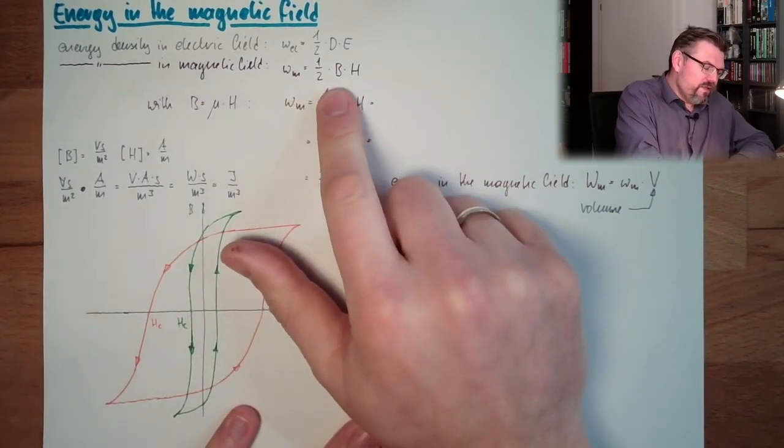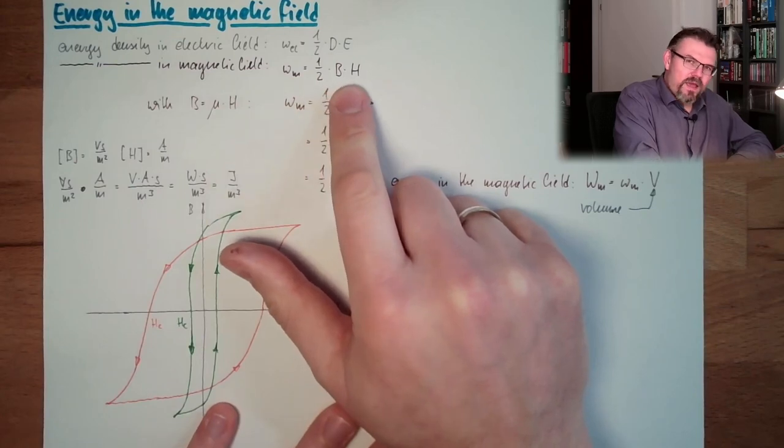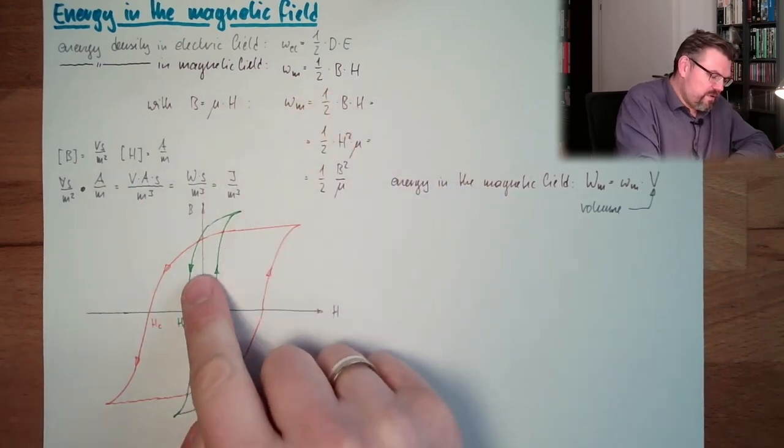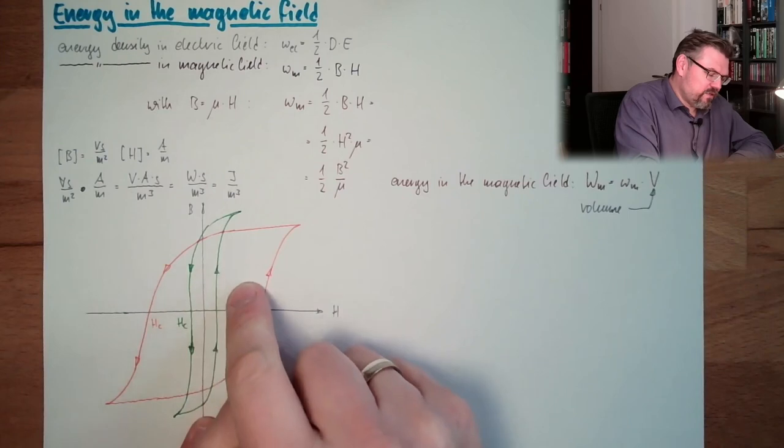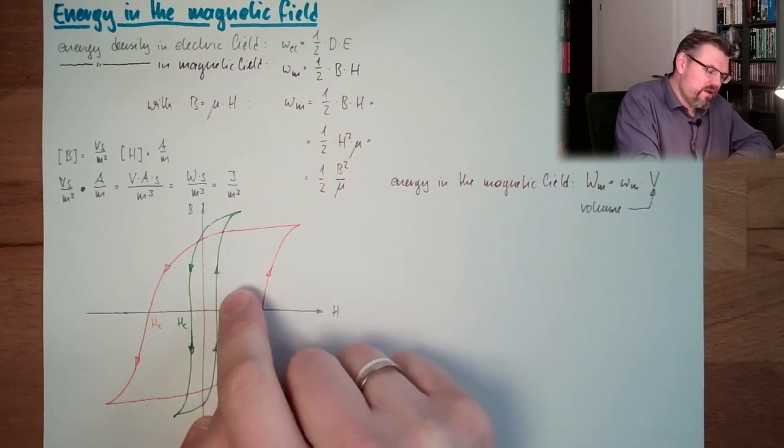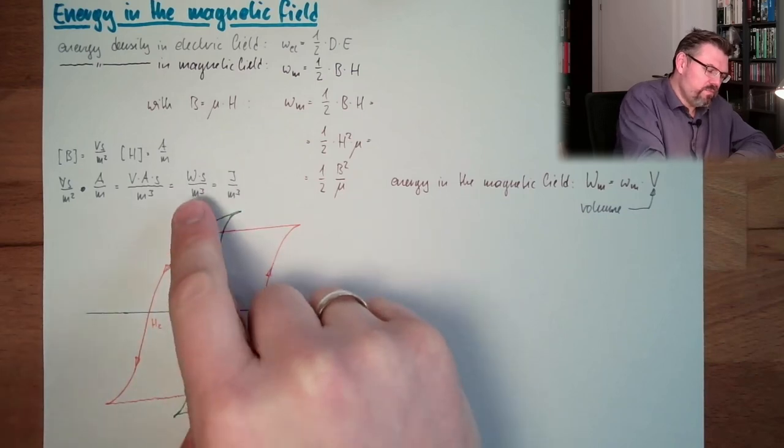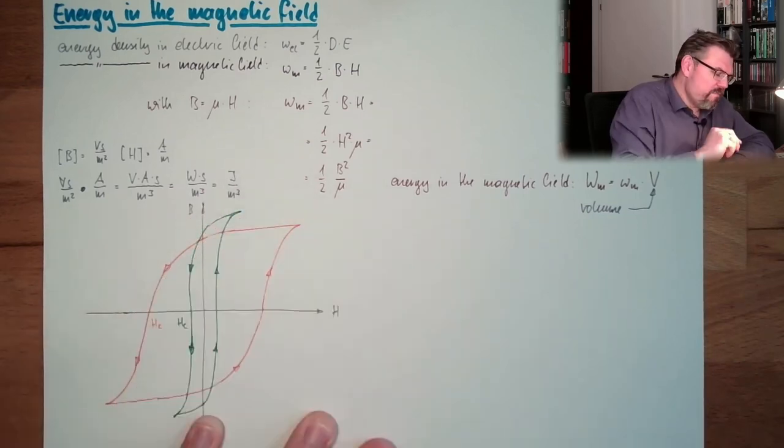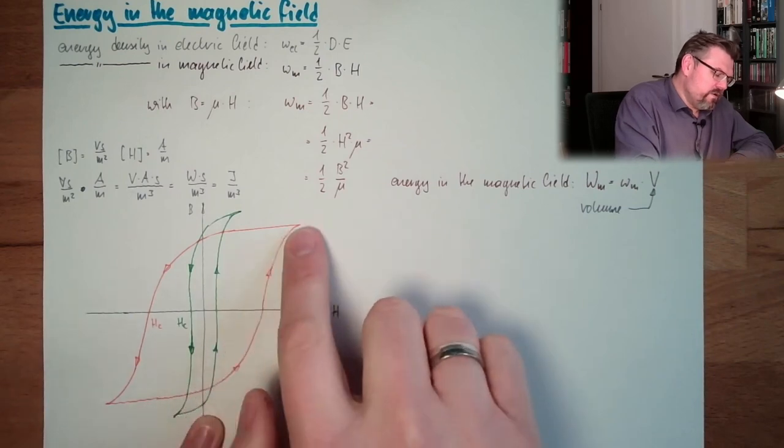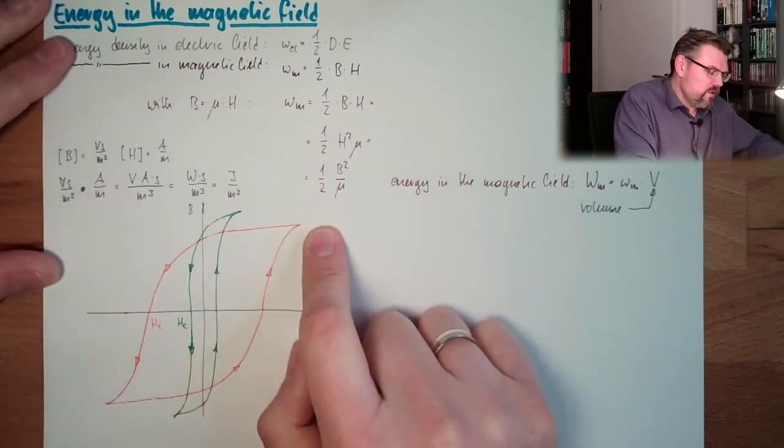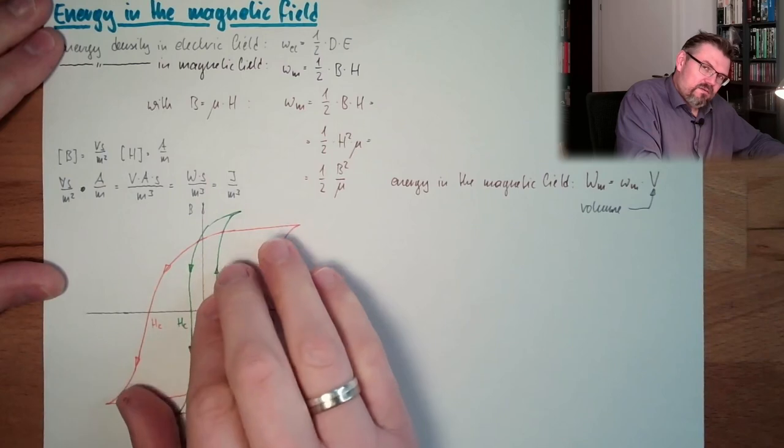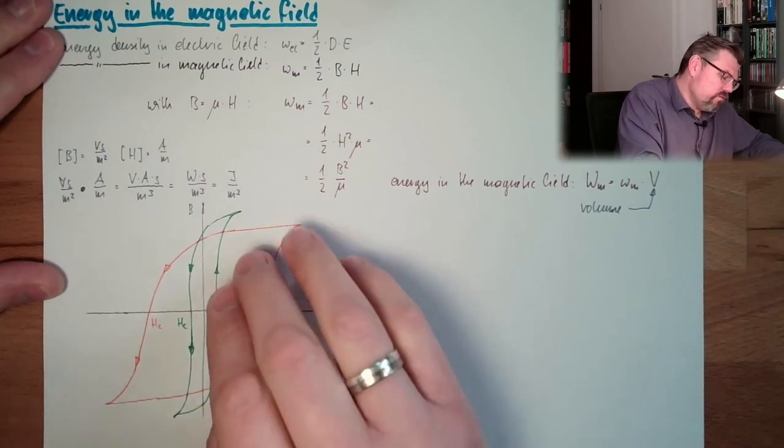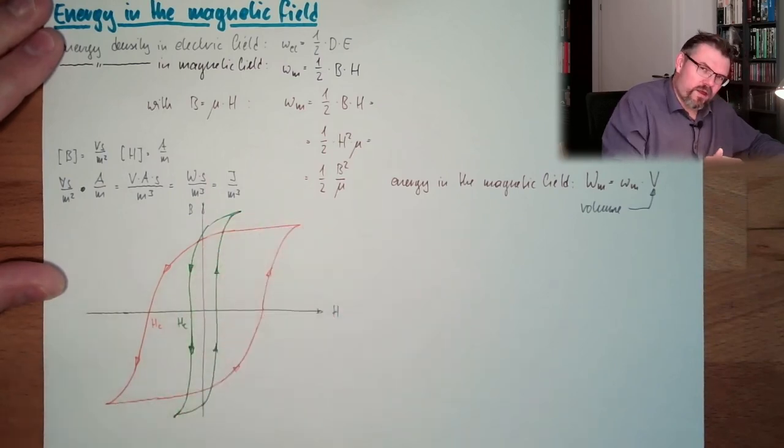Now, let's think about what is written here. B multiplied by H. This is actually an area in this drawing here. So B multiplied by H is an area in this drawing. And now let's compare those two materials. The red material has a big area. The green material has a small area.